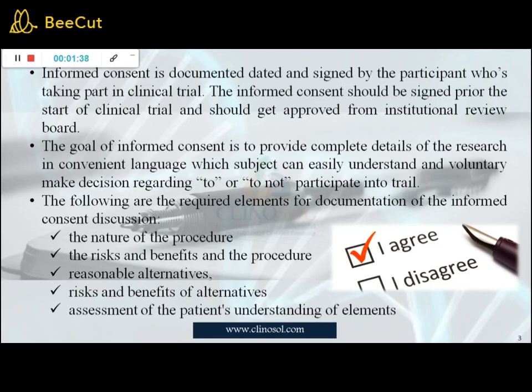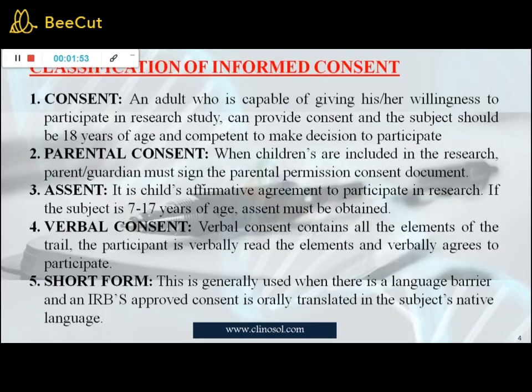The following are the required elements for documentation of the informed consent decision: the nature of the procedure, the risks and benefits of the procedure, reasonable alternatives, risks and benefits of alternatives, and assessment of the patient's understanding of these elements.